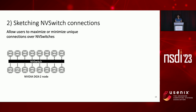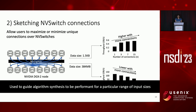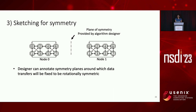Next, we look at sketching connections within a node. The NV switch interconnect within a node allows all-to-all connectivity between GPUs. We obtain the throughput of sending data from every GPU to n other GPUs simultaneously for increasing n, and find that data transfer throughput increases with n for small data sizes and decreases with n for larger data sizes. This leads us to add another sketch element where users can specify whether to minimize or maximize unique connections over NV switches, guiding algorithm synthesis to be performant for a particular range of input. Finally, in the common case where all nodes are the same or a node itself is symmetric, users can provide a plane of symmetry around which data transfers will be fixed to be rotationally symmetric, reducing the number of transfers the synthesizer has to make decisions about.